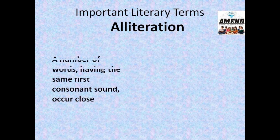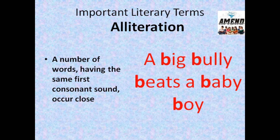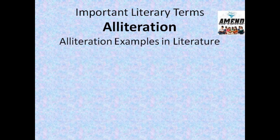Alliteration — 'a big bully beats a baby boy.' Alliteration is a stylistic device which involves a number of words that have the same consonant sound placed close to each other in a series. Even a newcomer to English can easily identify that the sound is being repeated over and again. So this is what an example of alliteration is — a simple example.